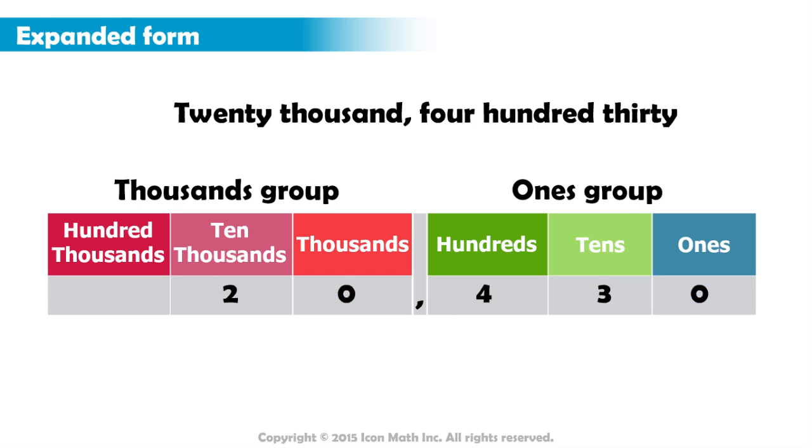The digit 2 is in the ten thousands place, so its value is 2 times 10,000, which is 20,000. The hundreds digit is 4, so its value is 4 times 100, which is 400. And the tens digit is 3, so its value is 3 times 10, which is 30.